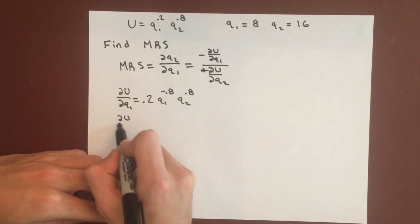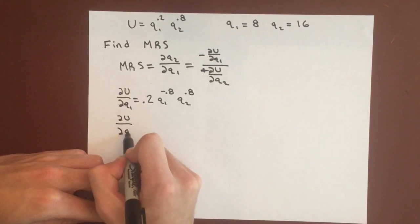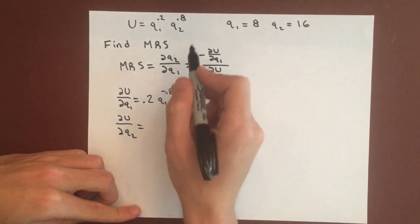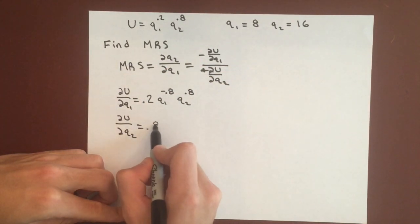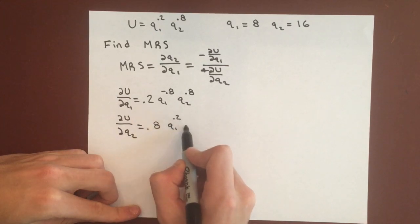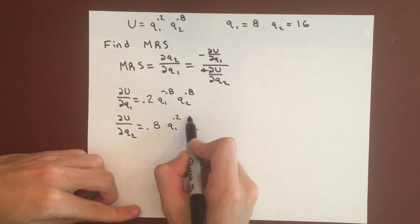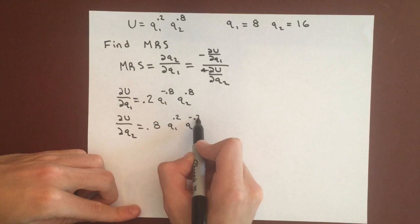And then for marginal utility of good 2, we can get the partial derivative with respect to Q2: 0.8 times Q1 to the 0.2 times Q2 to the negative 0.2.